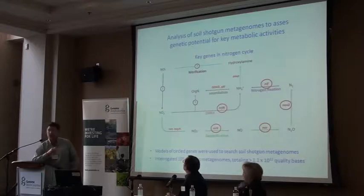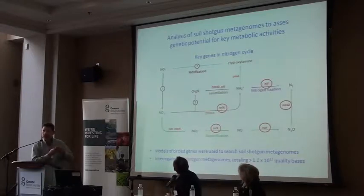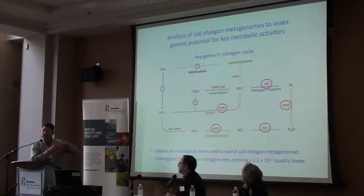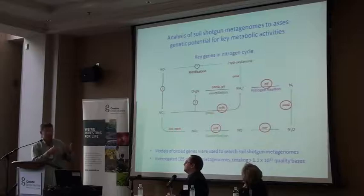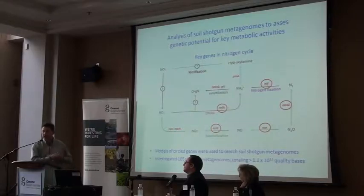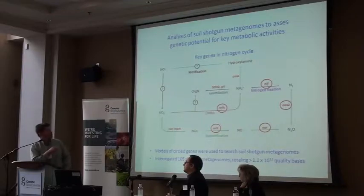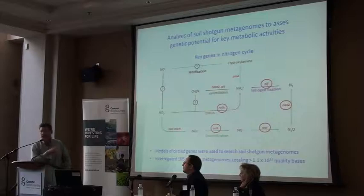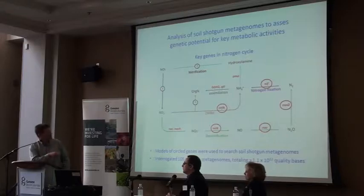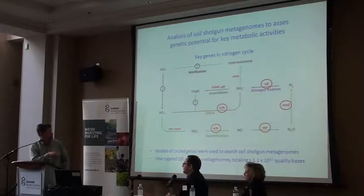One last approach: to get at functional groups of organisms and really get beyond species to simply look at the functions of cells, we used analysis of shotgun metagenomes. Unlike pyrotag analysis where we look at a single PCR amplicon, here we sequence total DNA from the soil community and probe it for abundances of genes encoding activities important to this system. Certainly the nitrogen cycle is a very important aspect of soil communities, and a number of genes encoding key functions within this cycle were highlighted.